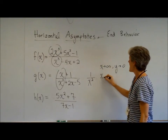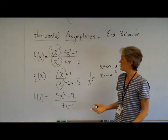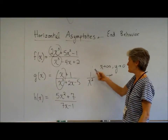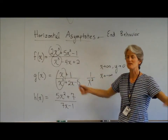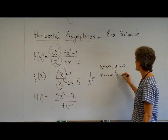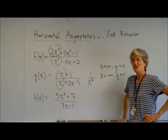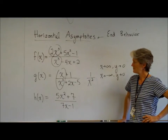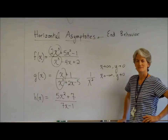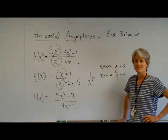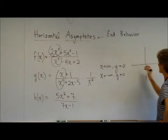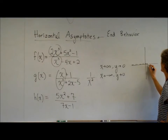It is, absolutely. Now, is that going to happen when I'm plugging in a negative number? Sure, why not? I'm still getting 1 divided by something humongous. Whenever you divide 1 by something humongous, you're going to get something close to zero. You look at the controlling terms — the bottom guy has a bigger exponent than the top guy — so the bottom is growing faster than the top. If you have a fraction and the bottom is way bigger than the top, you're approaching a teeny tiny number. You're approaching zero.